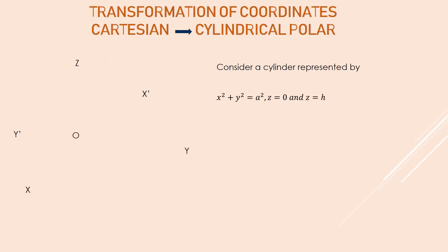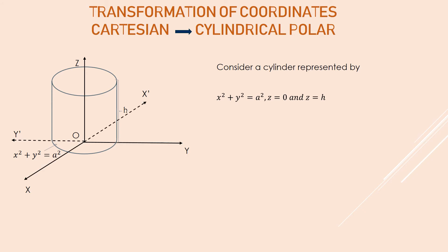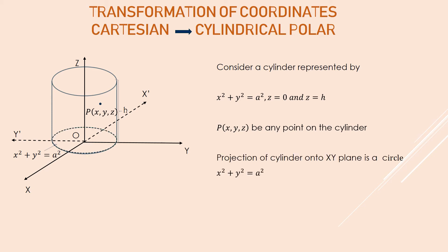Let us go to the next system, which is the cylindrical polar system. For this, consider a cylinder represented by x² + y² = a² with height z = h. The base circle is x² + y² = a². Let me mark the coordinate axes so we can think about representing x, y, z using the cylindrical system. Let me mark P(x, y, z) as any point on the cylinder.